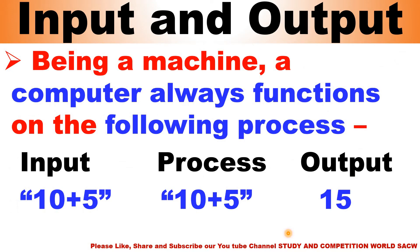Being a machine, a computer always functions on the following process. First, input — if you give a computer input from the keyboard: 10 plus 5. In process, it will compute 10 plus 5 in the CPU. But when you see the monitor, you will see the output, which is 15. This is the process of any input-output.